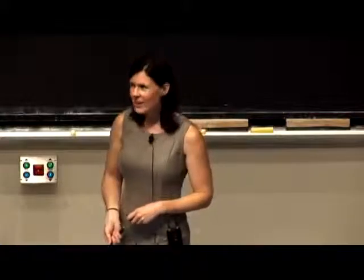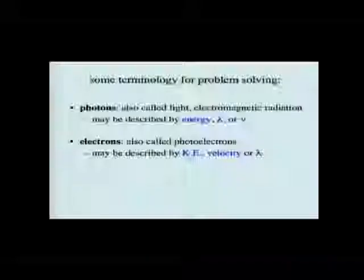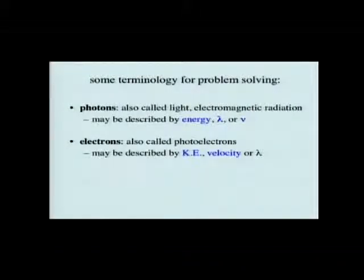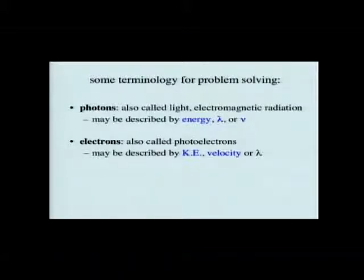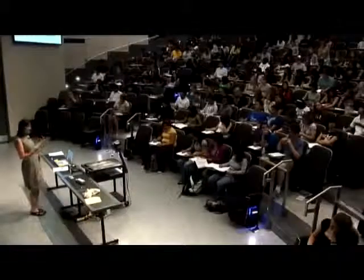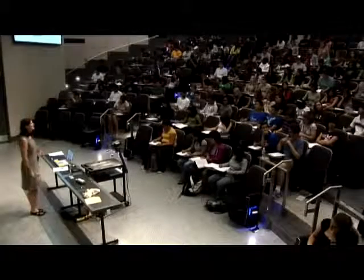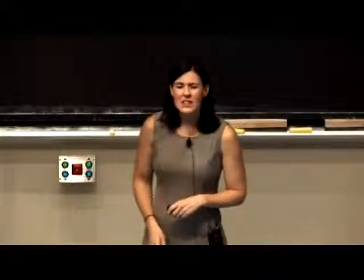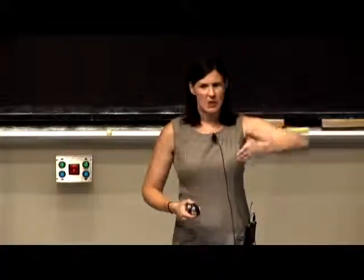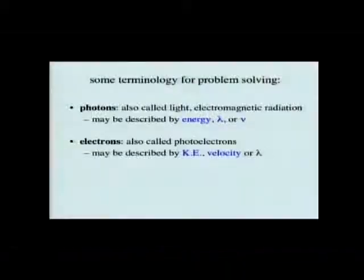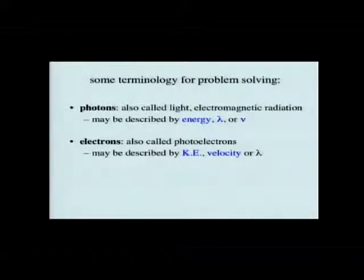In terms of talking about the electrons, I wanted to point out that in the book and other places you might see electrons referred to as photoelectrons. That's sometimes confusing because it seems like — is it a photon or is it an electron? To clarify: it is an electron. It's called a photoelectron simply because it's an electron that results when an electron absorbs a photon's worth of energy.